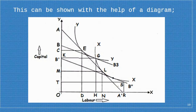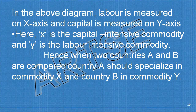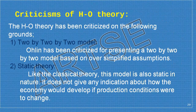This establishes the HO theorem: the capital-abundant country will export the relatively cheap capital-intensive commodity, and the labor-abundant country will export the relatively cheap labor-intensive commodity. Comparing countries A and B, country A should specialize in commodity X and country B in commodity Y. Now let us see the criticisms of the HO theory.